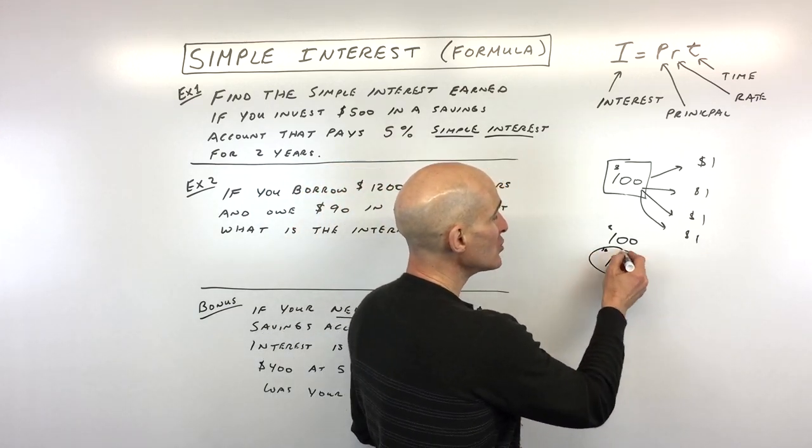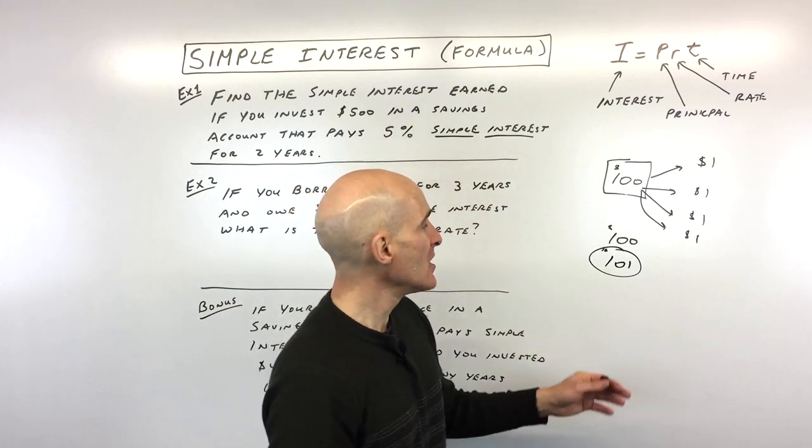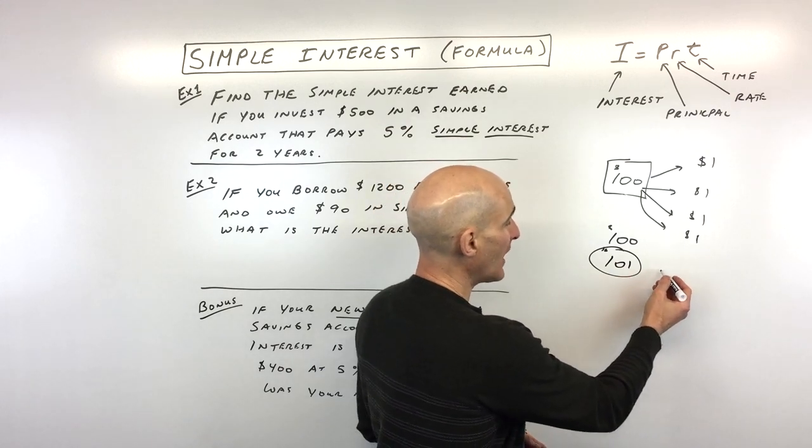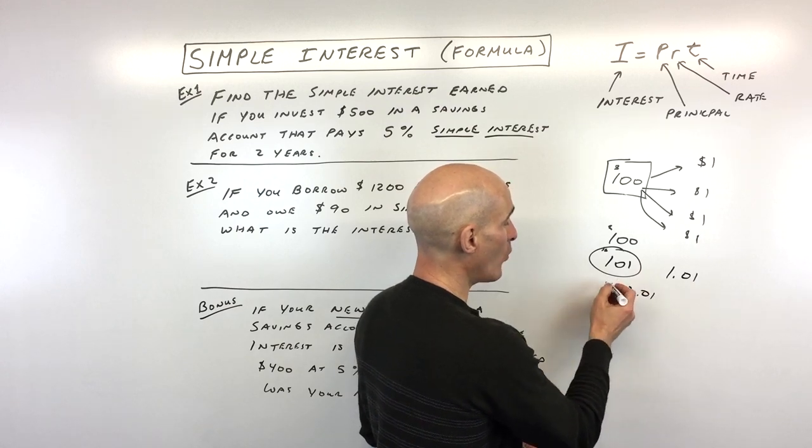Then you take that $101 and calculate 1% on the $101. That's going to give you $1.01. So now you have $102.01.